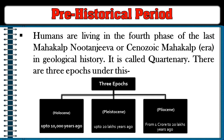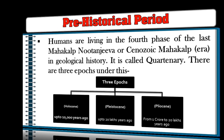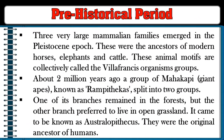In geological history this era is called the Quaternary. There are three epochs under it: Holocene (up to 10,000 years ago), Pleistocene (up to 20 lakh years ago), and Pliocene (from one crore to 20 lakh years ago). Three very large mammalian families emerged in the Pleistocene epoch — the ancestors of modern horses, elephants, and cattle — collectively called the Villafranchian organism groups.